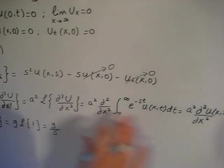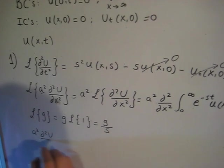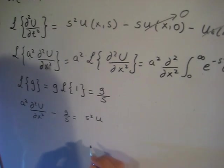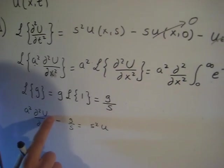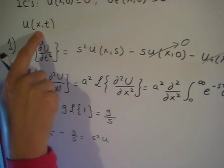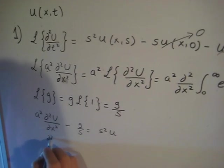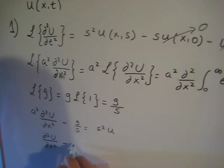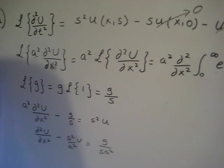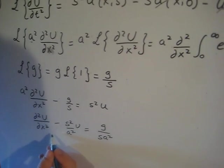Now we are going to substitute every single term back into our original PDE. Therefore, what we have is a²·d²U/dx² minus g/s equals a²·s²·U. Note that U here is a function of x and s, whereas our goal is to find u as a function of x and t. We place this in standard form: d²U/dx² minus (s²/a²)U equals g/(s·a²). We have now converted the PDE into an ODE, and we will move on to step two.